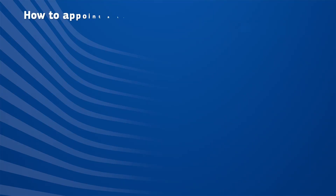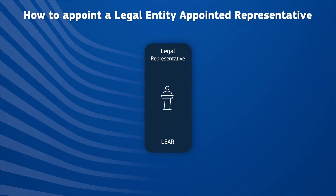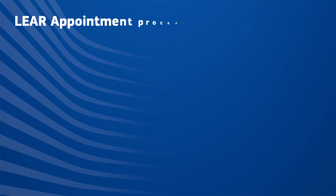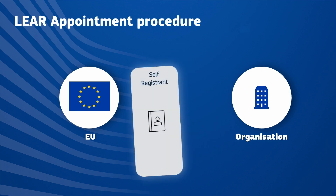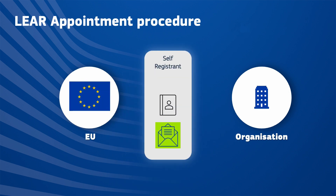In this video you will learn about how to appoint a Legal Entity Appointed Representative, otherwise referred to as the LEAR. The person who initially registered the organisation with the EU, known as the self-registerant, will receive the notification from the Central Validation Service to launch the LEAR appointment procedure. Any self-registerant assigned after your organisation's initial registration will also gain access to manage this procedure. Please note that the registration and validation of your organisation is a prerequisite for the validation of your LEAR.